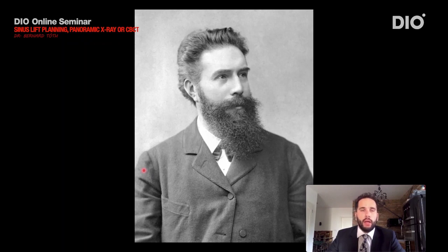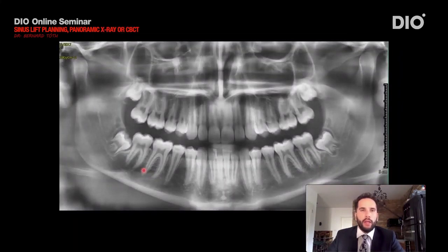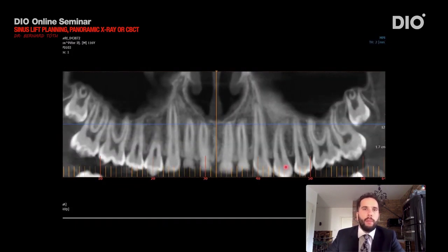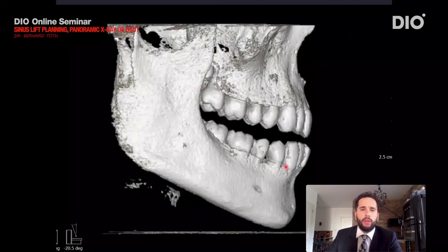Konrad Röntgen invented the X-ray in 1895, and in the early 20th century periapical X-rays were invented also. Around the 1960s panoramic X-rays came — this is a very modern X-ray image. And in the beginning of the 21st century, the CBCT came. A CBCT shows the coronal slice, the sagittal slice, the horizontal slice, and of course the three-dimensional reconstruction. From a CBCT we can also make a panoramic live view, which we usually do.